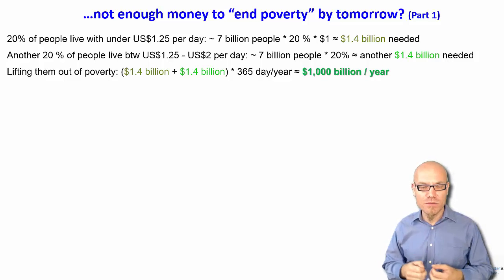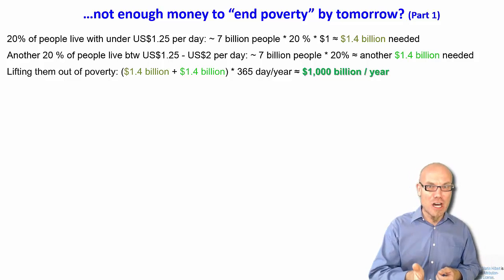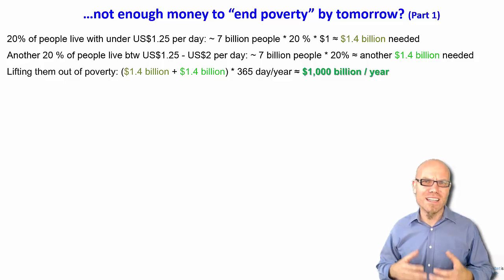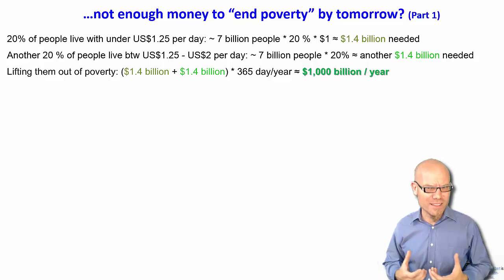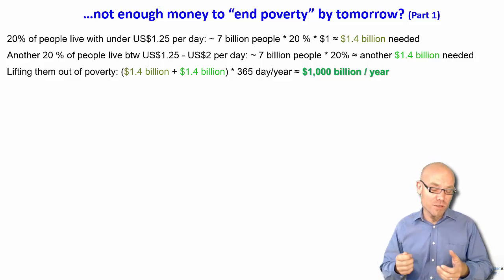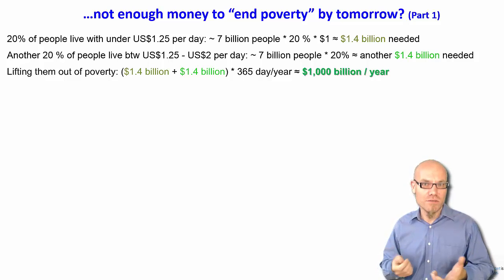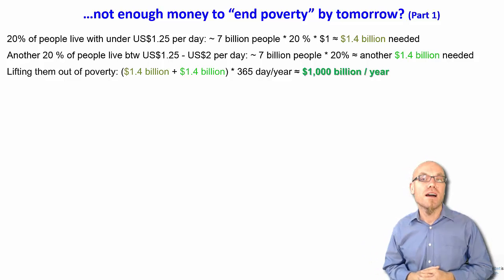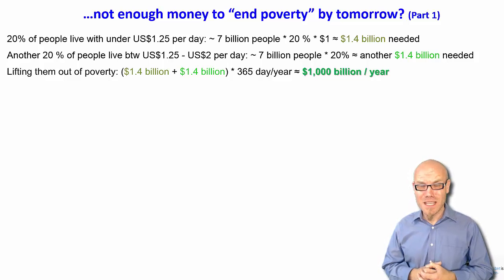Now it wouldn't work by literally giving people an additional dollar — you wouldn't go there and say, here's a dollar, you're out of poverty. Instead, you would take this trillion dollars and invest it into education and healthcare in developing countries. It would still show up on the accounting sheet showing that these people, on average, receive services equivalent to this amount of money. But you would need a trillion dollars — that's a lot of money.